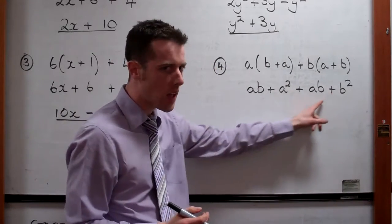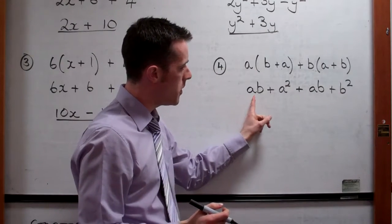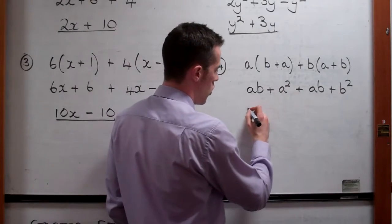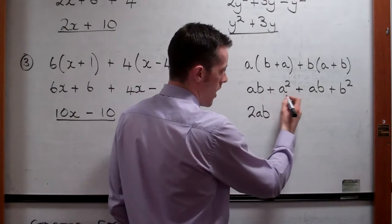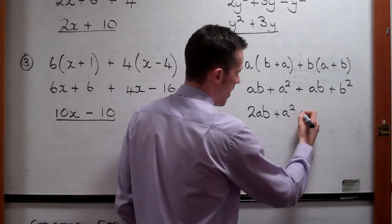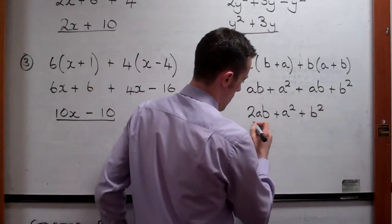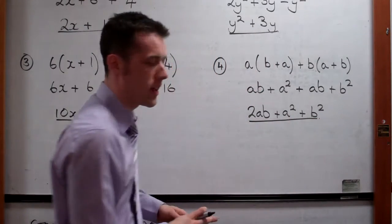Can you see anything we would add together there? Well, we've got ab and ab here. They're the same. So that would make two ab's. And we've just got a squared and then b squared as well. There's nothing else there we can add together.